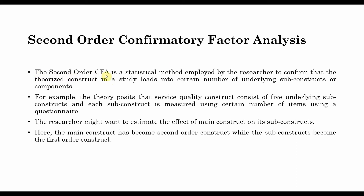The Second-Order CFA, that is Confirmatory Factor Analysis, is a statistical method employed by researchers to confirm that the theorized construct in a study loads into a certain number of underlying sub-constructs or components. A construct is modeled at a higher level, meaning a variable has sub-dimensions. For example, service quality has five underlying sub-dimensions, each measured using different items or indicators.